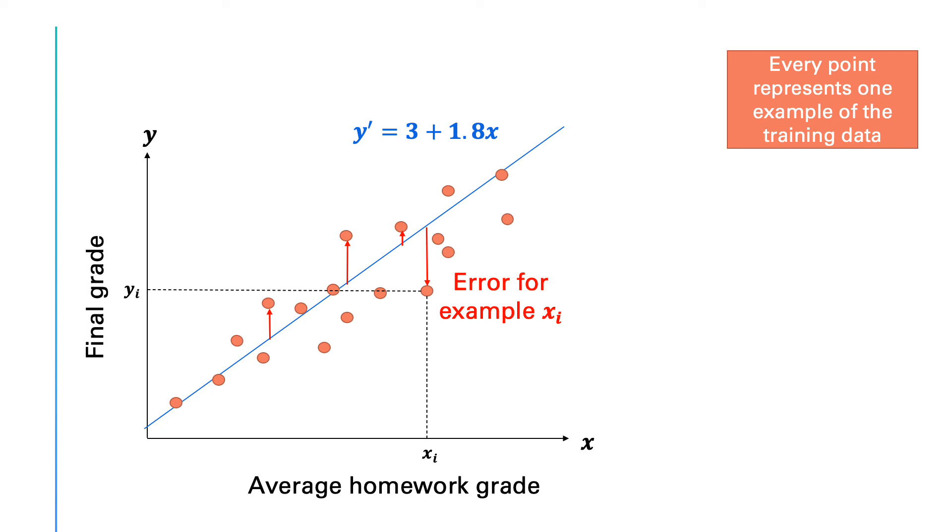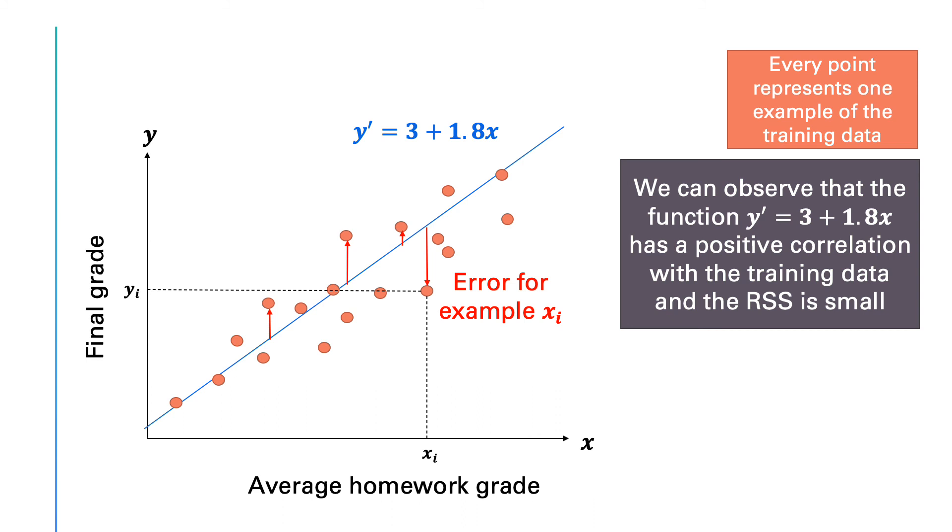You can see that the slope of this function is positive, indicating that if you increase x by 1, then y is increased by 1.8. The positive slope and the trend of the data confirm a positive correlation. On average, better homework grades lead to a better final grade.